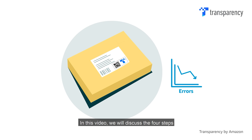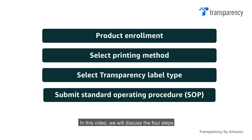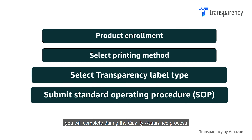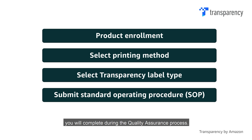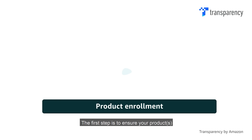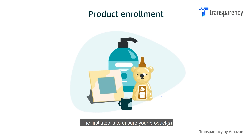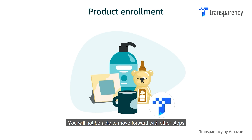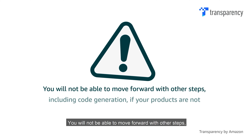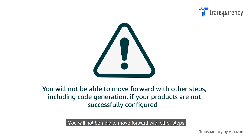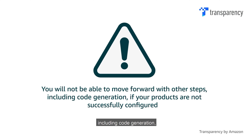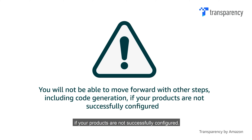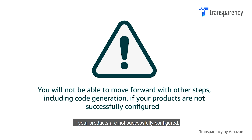In this video, we will discuss the four steps you will complete during the Quality Assurance process. The first step is to ensure your products are successfully enrolled with Transparency. You will not be able to move forward with other steps, including code generation, if your products are not successfully configured.